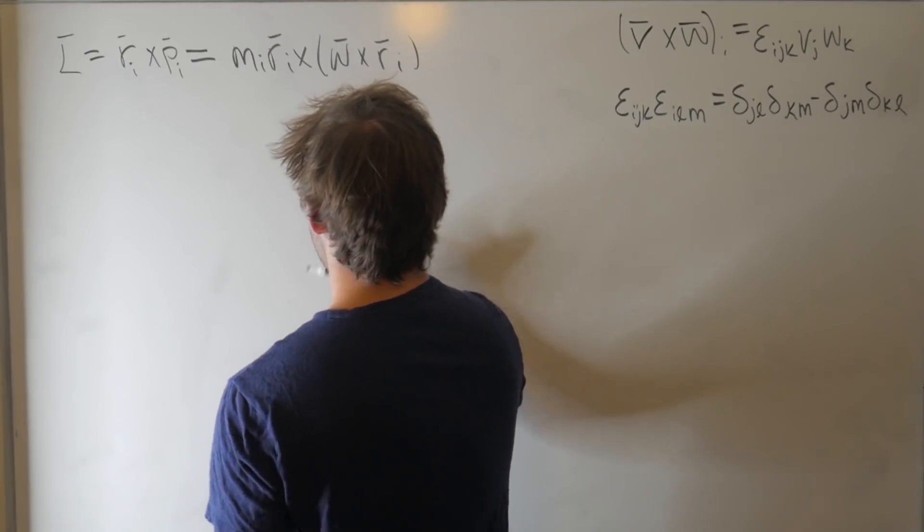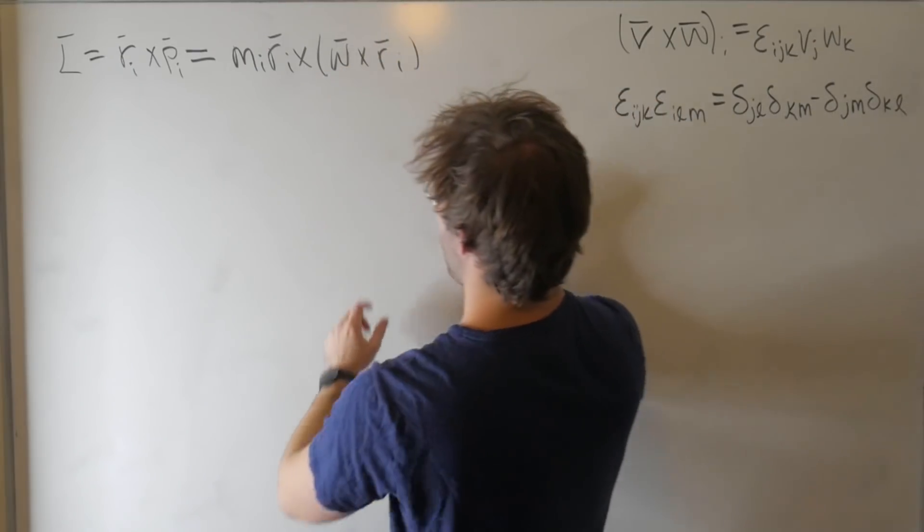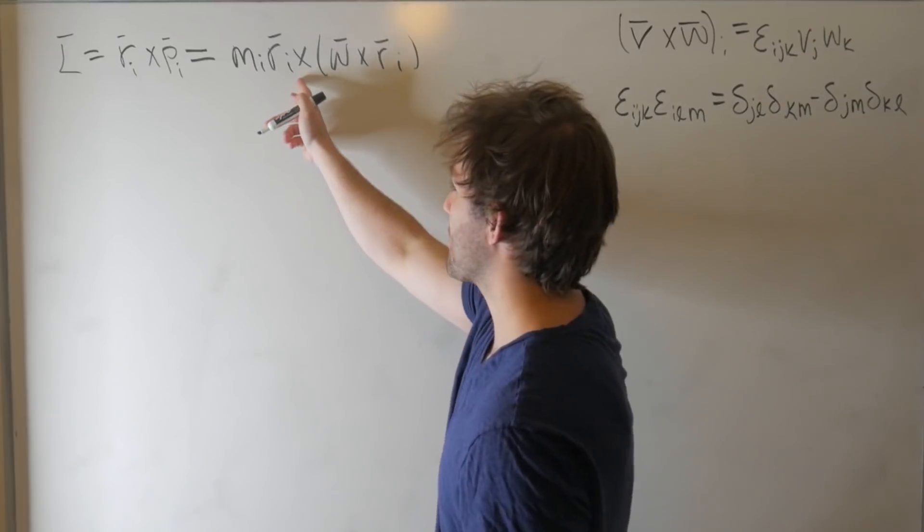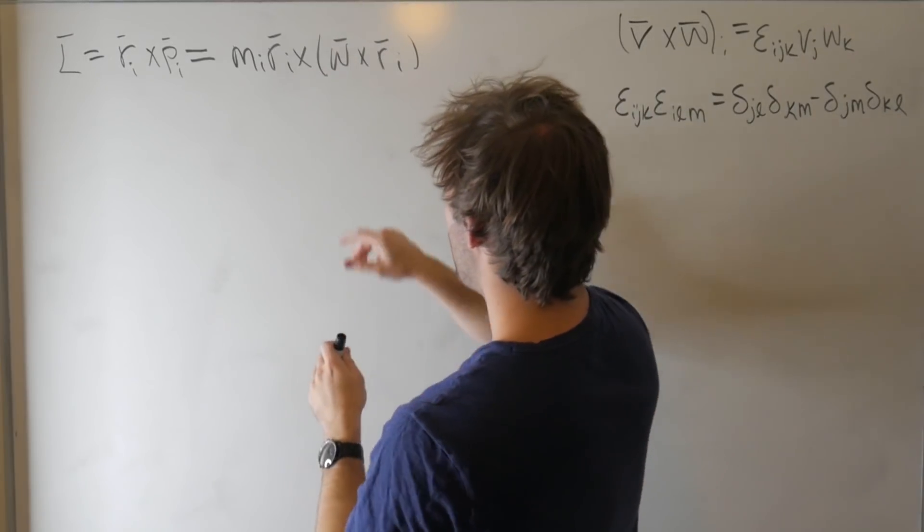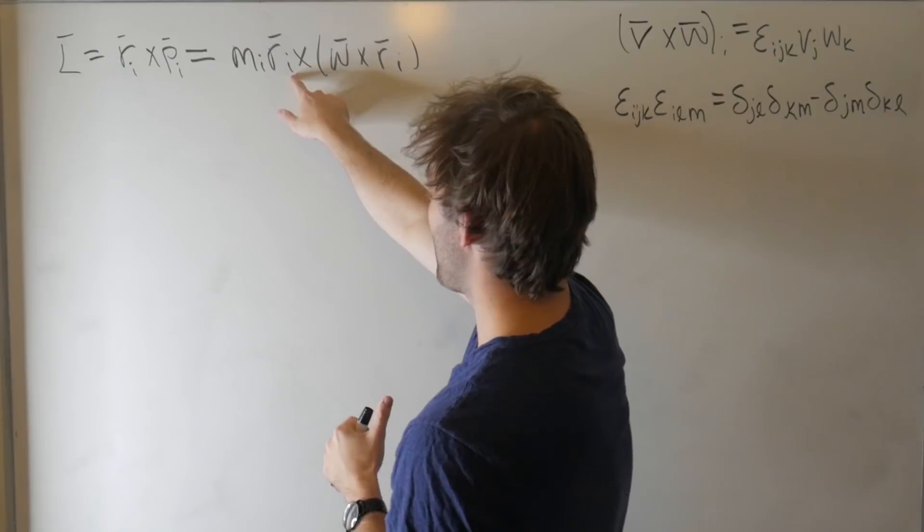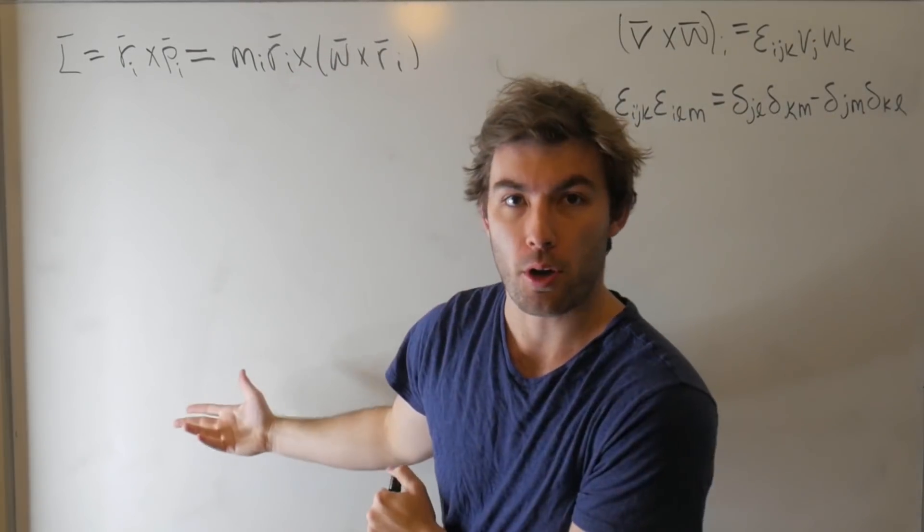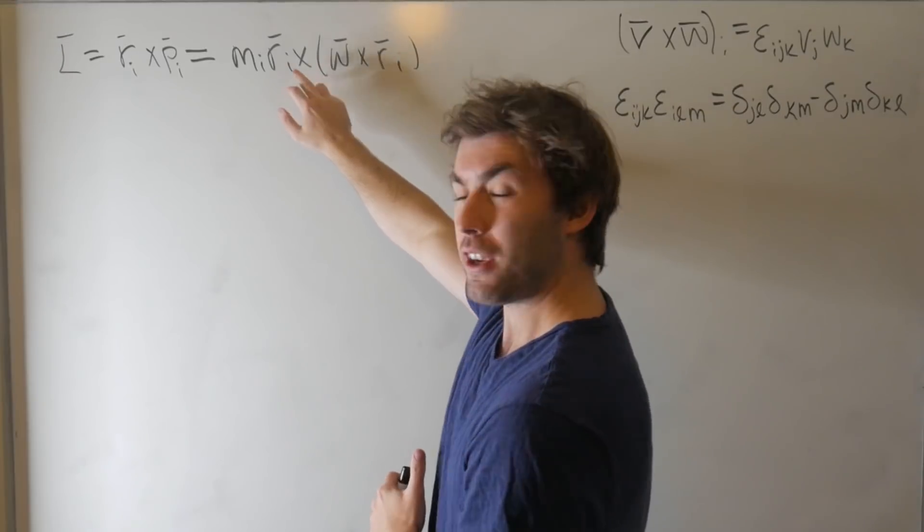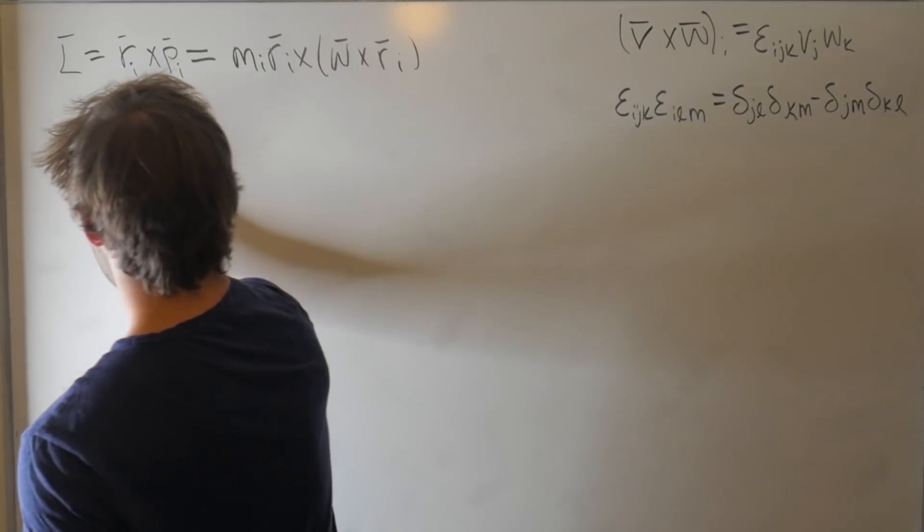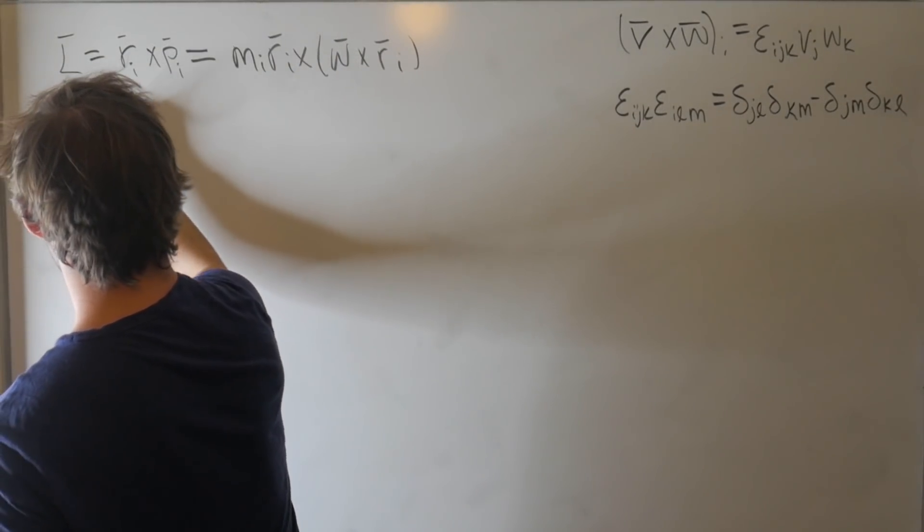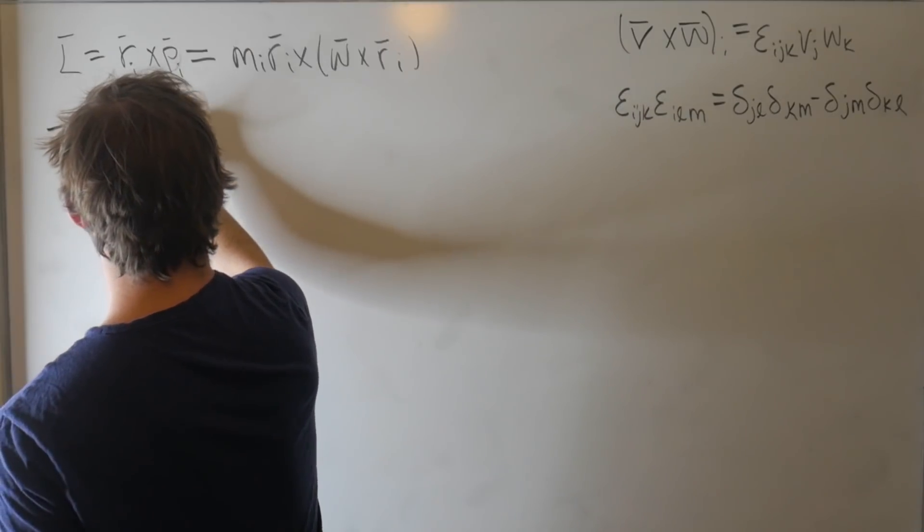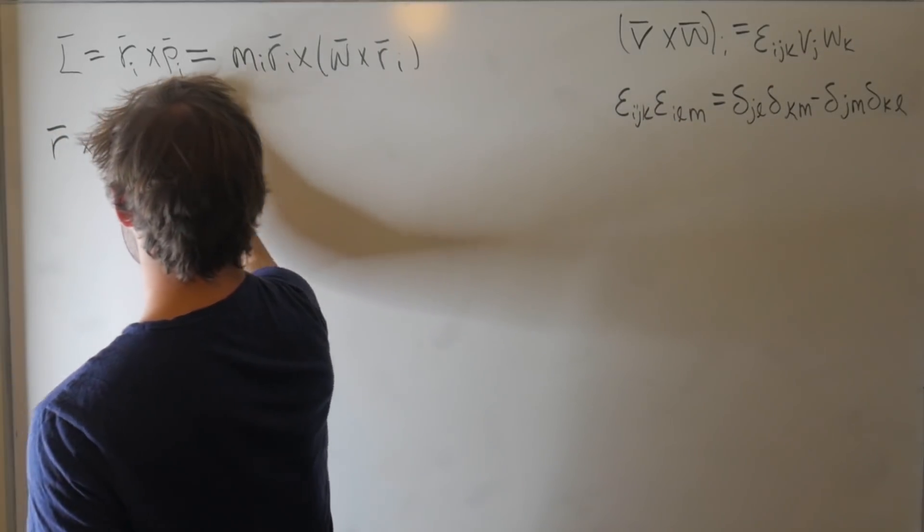So let's go ahead and do that. If I want to talk about the i-th component, let's drop the i-index, and then we'll tack it back on eventually. This index is not for a component of a vector. It's just saying, for the i-th particle. So let's forget about that for now. Let's just consider this cross product, this double cross product, r cross omega cross r. And I'm going to look at the i-th component of this.